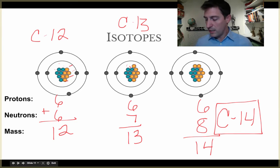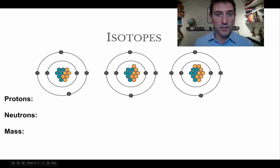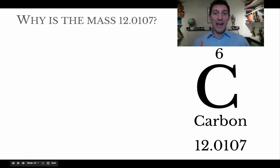Isotopes are going to be really important in understanding all of the concepts of chemistry as we go down the road. And it takes us to answer this question: why is the mass of carbon on the periodic table 12.0107?